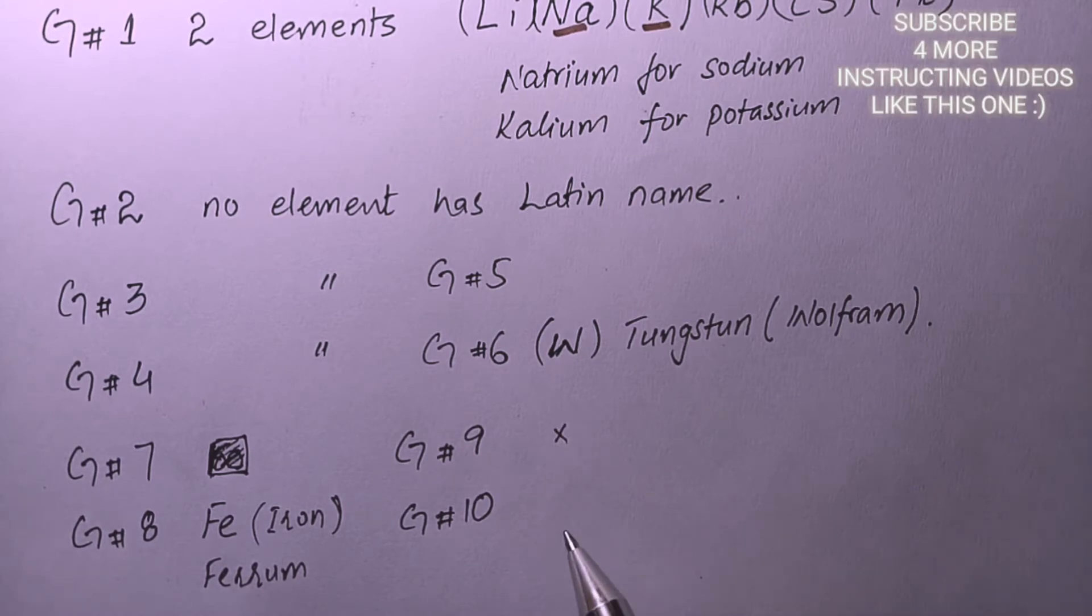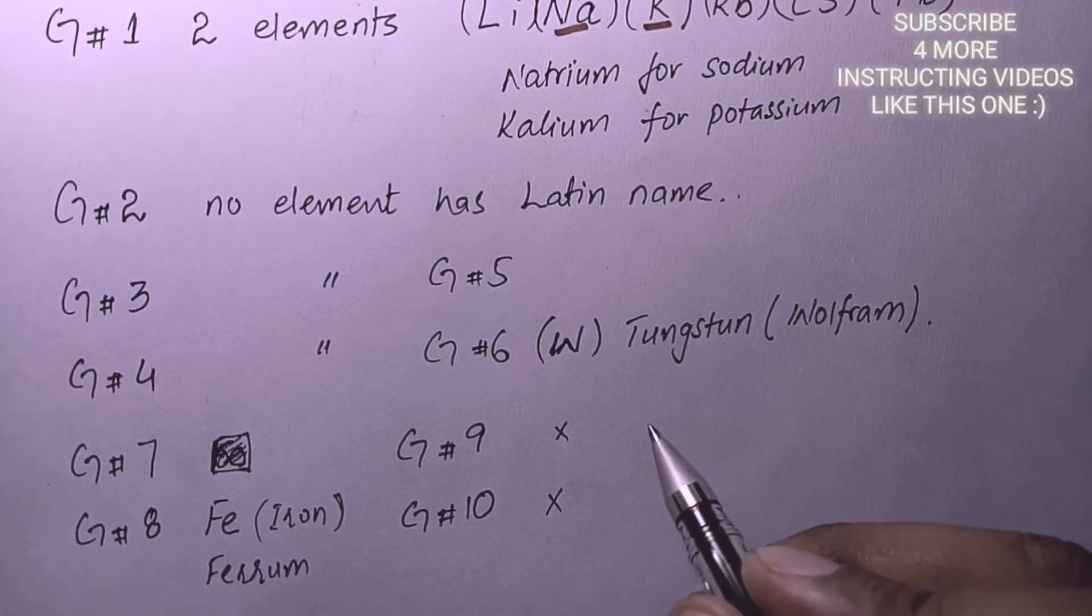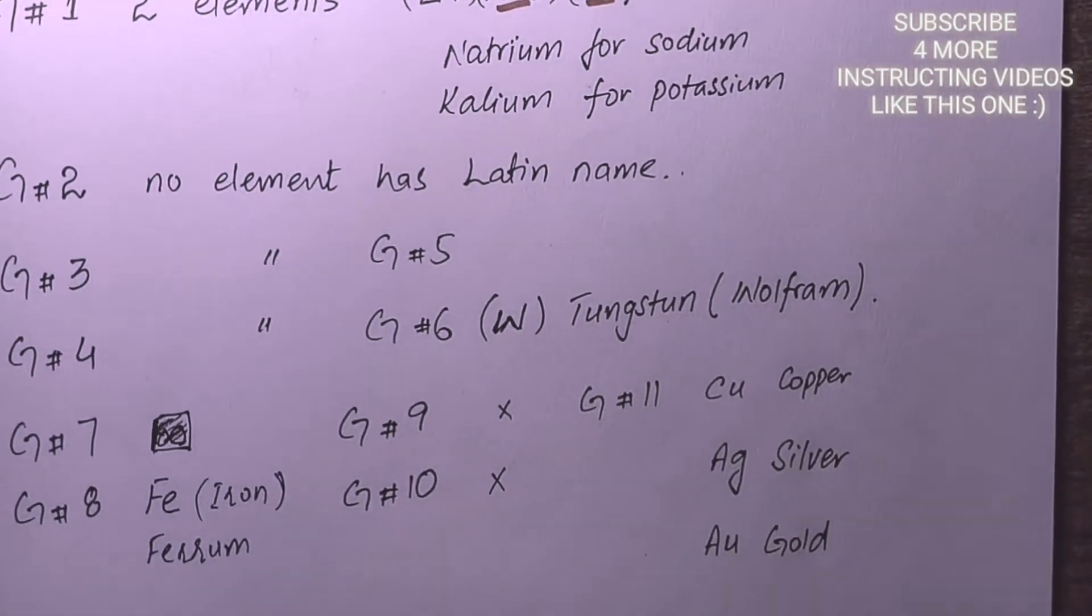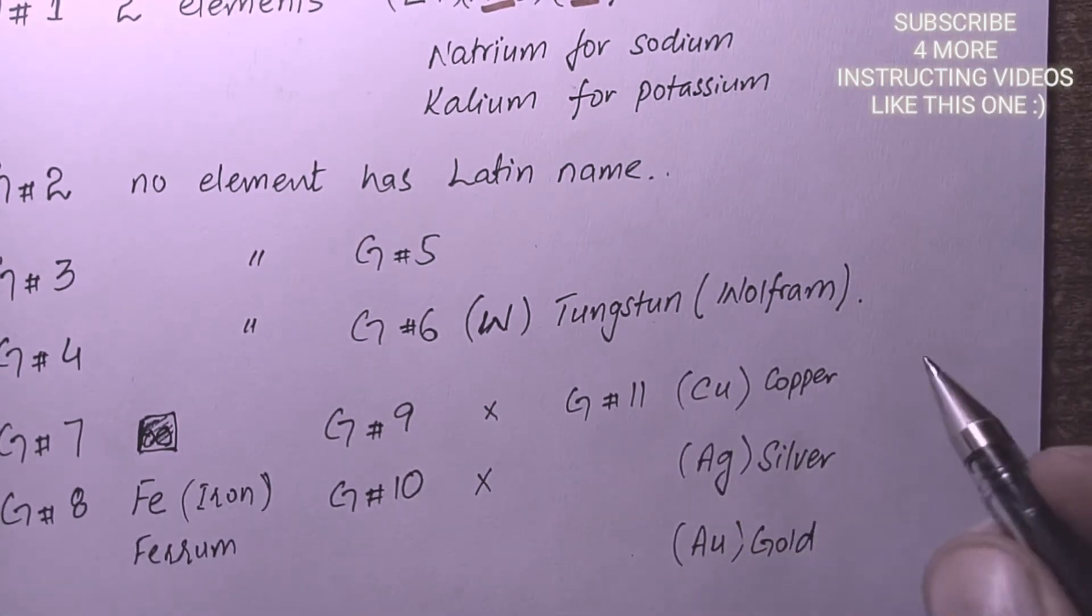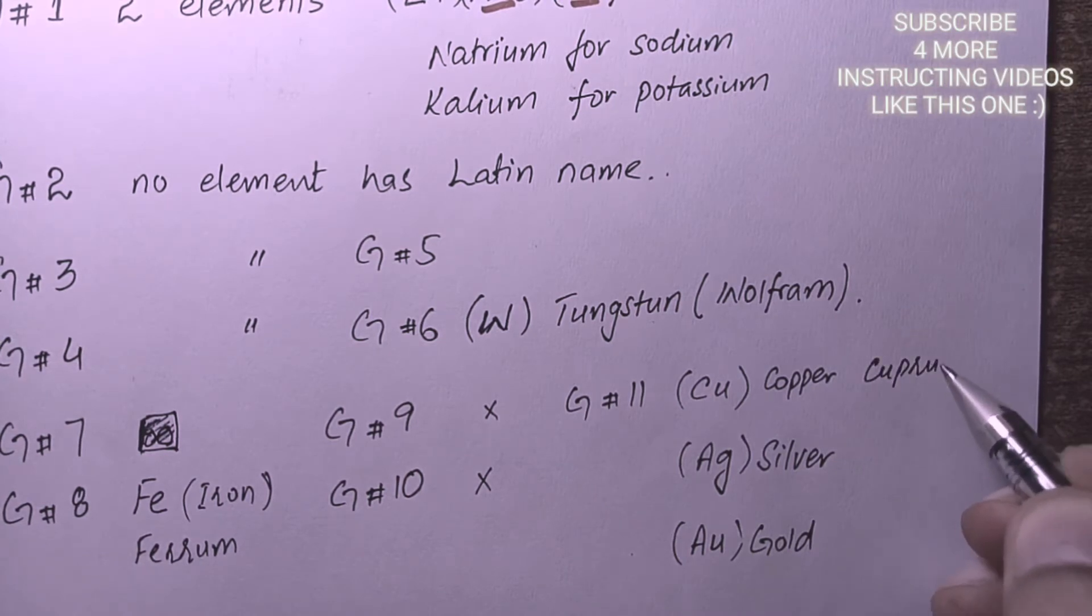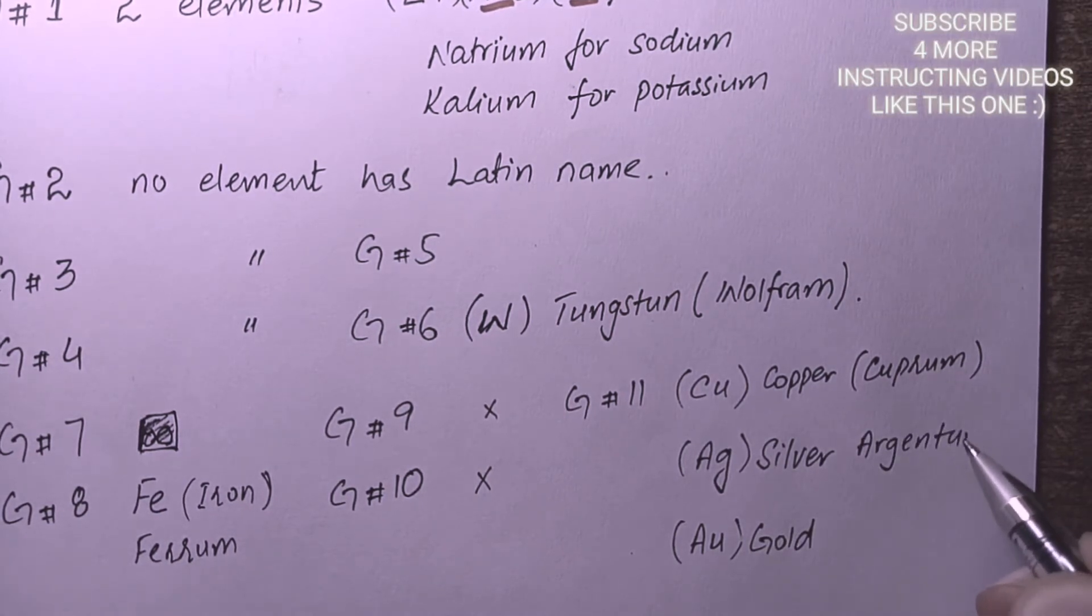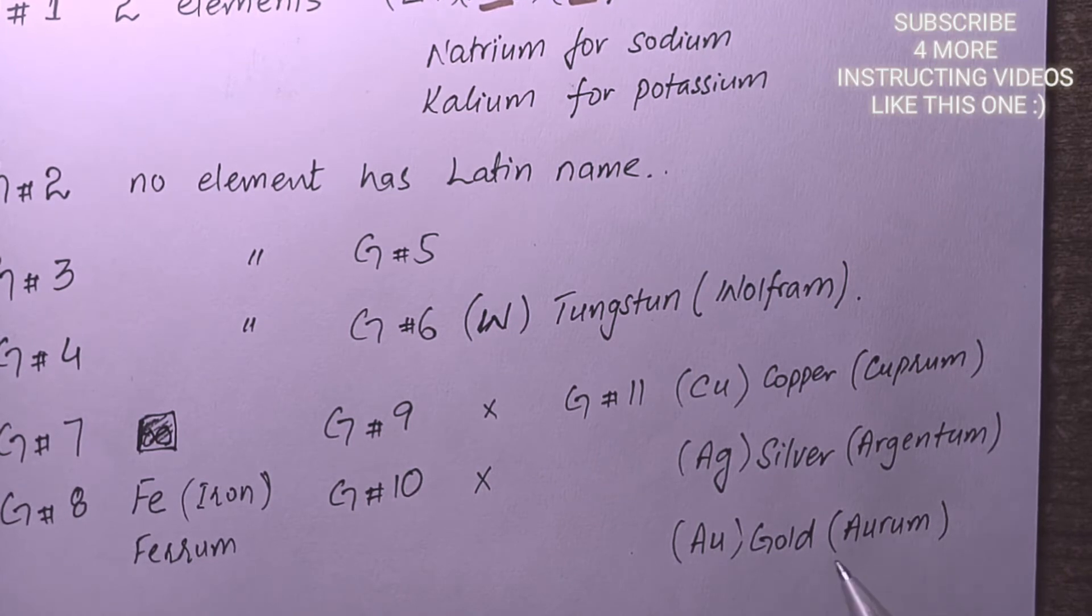In group 9 there is no element with any kind of Latin name, and group 10 also doesn't possess any Latin or Greek name element. Then we move towards group 11. We have three elements. Cu stands for Cuprum, Ag stands for Argentum, and Au stands for Aurum. Gold has the Latin name Aurum, silver has Argentum, and copper has Cuprum.